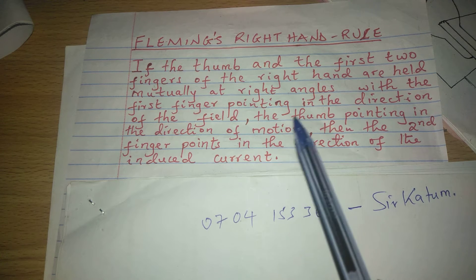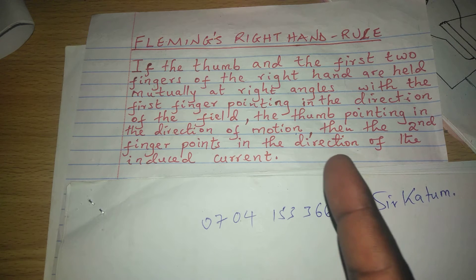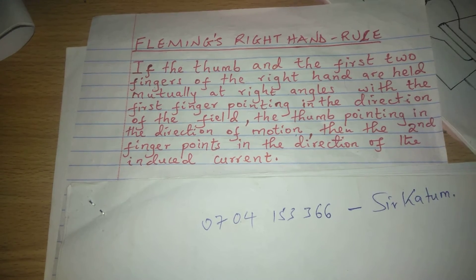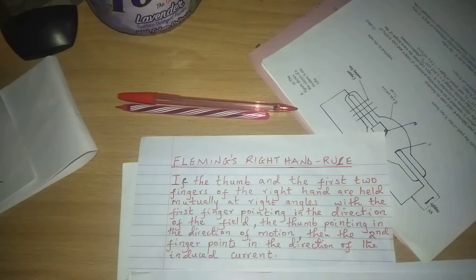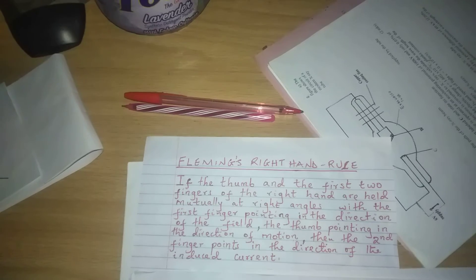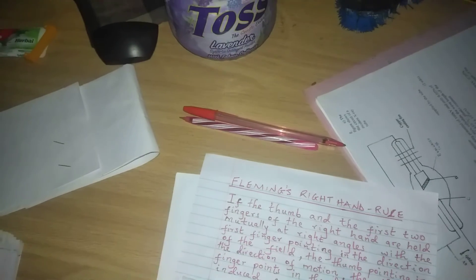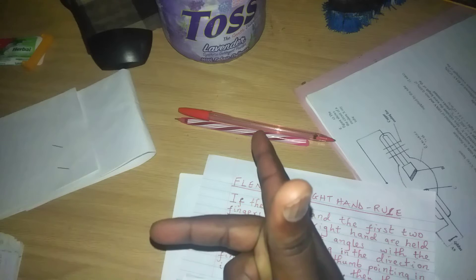When inside a magnetic field a conductor is made to make some relative motion, then an induced EMF is created which leads to an induced current, and we have to determine the direction of this current being induced. When the thumb and the first two fingers are held mutually at right angles, such that the first finger is pointing in the direction of the field and the thumb in the direction of motion, the second finger points in the direction of the induced current.